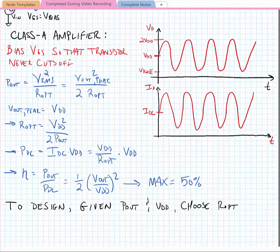To design a Class-A amplifier, or any power amplifier really, given the output power and VDD, we just have to choose the optimum termination impedance and size the transistor appropriately.